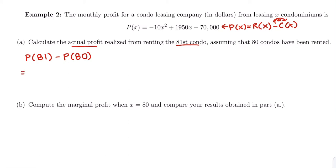We're going to plug into this big long equation up here. It's going to take a little bit. Grab your calculator. Negative 10 times 81 squared plus 1950 times 81 minus 70,000. You should get $22,340.